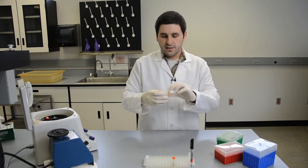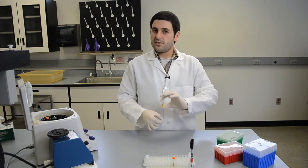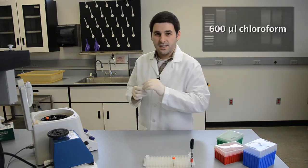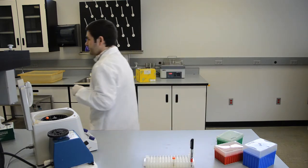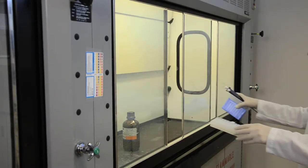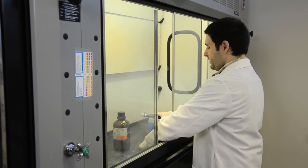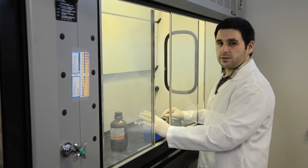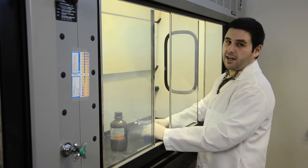After you have transferred the liquid to a new Eppendorf tube, we want to add 600 microliters of chloroform to this tube, and we have to do that in the fume hood. In the fume hood, we add 600 microliters of chloroform to the DNA extraction solution.